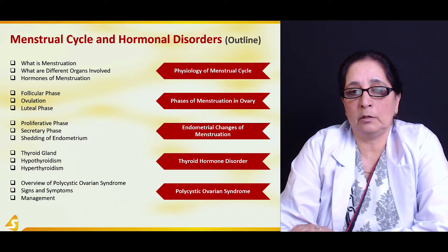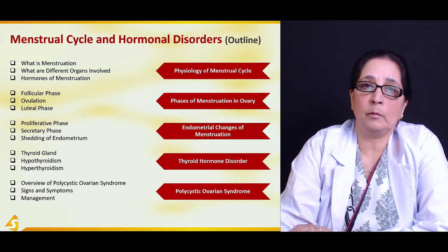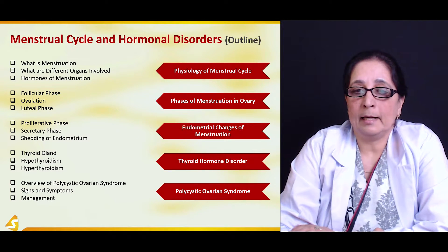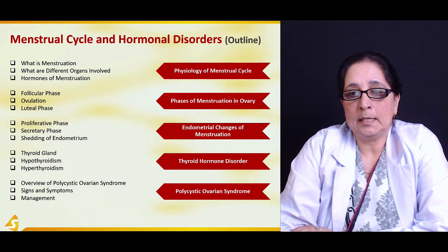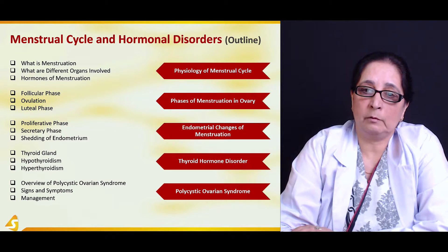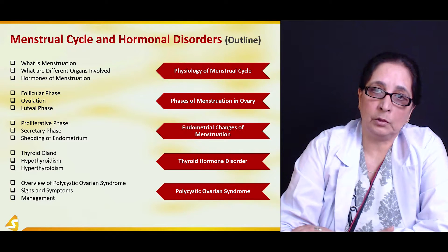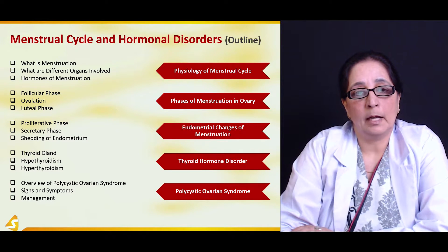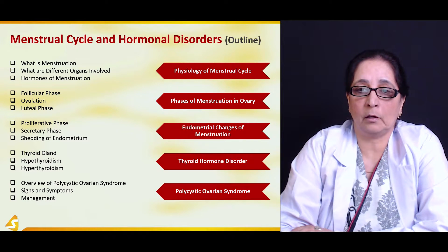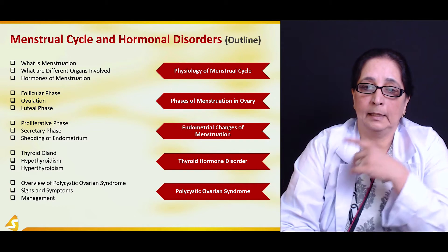In the fourth section of our lecture we will talk about thyroid hormone disorder. Thyroid hormone is produced by the thyroid gland and plays a very important role in fertility and ovulation. We will talk about the effects of low thyroid hormone — hypothyroidism — and the effects of high thyroid hormone levels — hyperthyroidism.